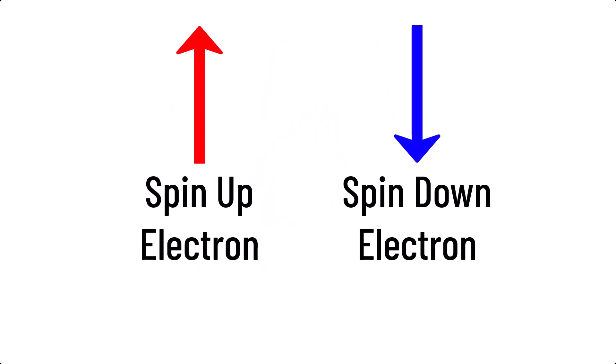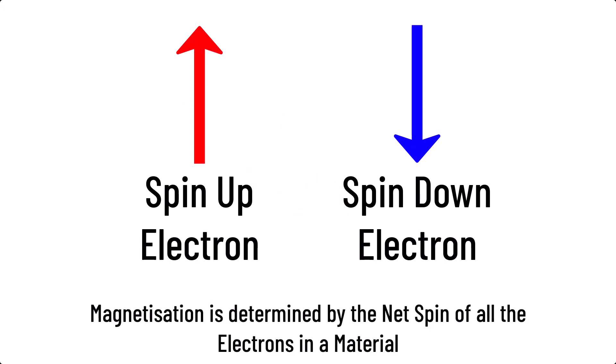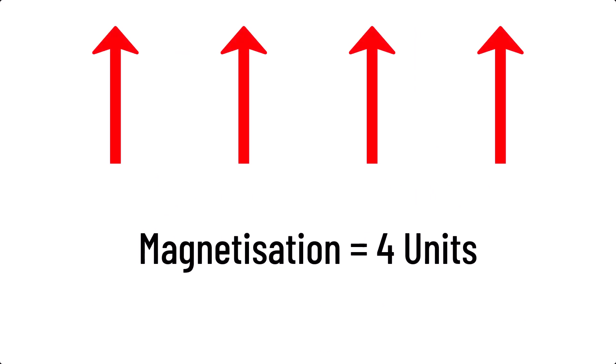Magnetization arises from the net spin of a material. This means the total spin of all the electrons in a material determine how ferromagnetic it is. For example, if we had four electrons all spin up, the magnetization would be four units. For three up and one down, it would be two units. Two up, two down, it would have zero magnetization.